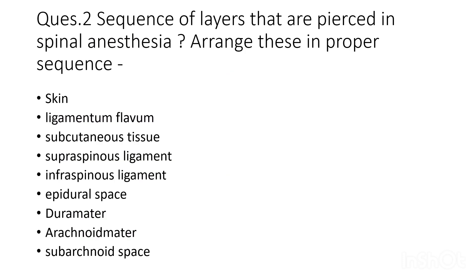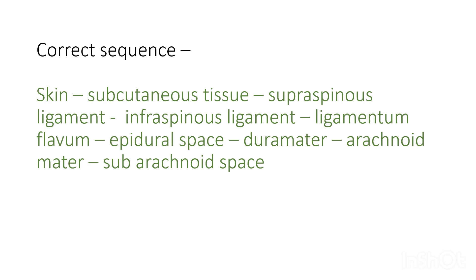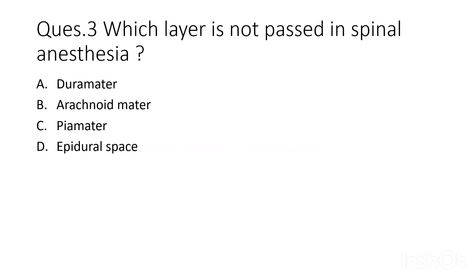Second question: arrange the sequence of layers pierced in spinal anesthesia — skin, ligamentum flavum, subcutaneous tissue, supraspinous ligament, infraspinous ligament, epidural space, dura mater, arachnoid mater, subarachnoid space. The correct sequence is: skin → subcutaneous tissue → supraspinous ligament → infraspinous ligament → ligamentum flavum → epidural space → dura mater → arachnoid mater → subarachnoid space.